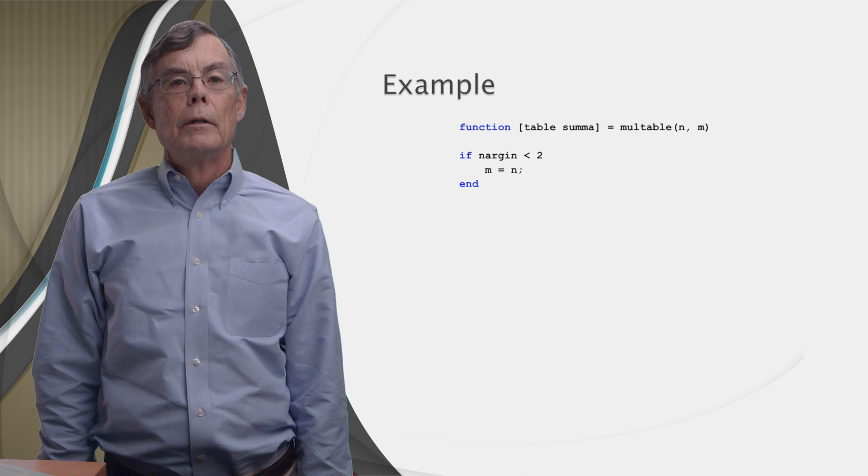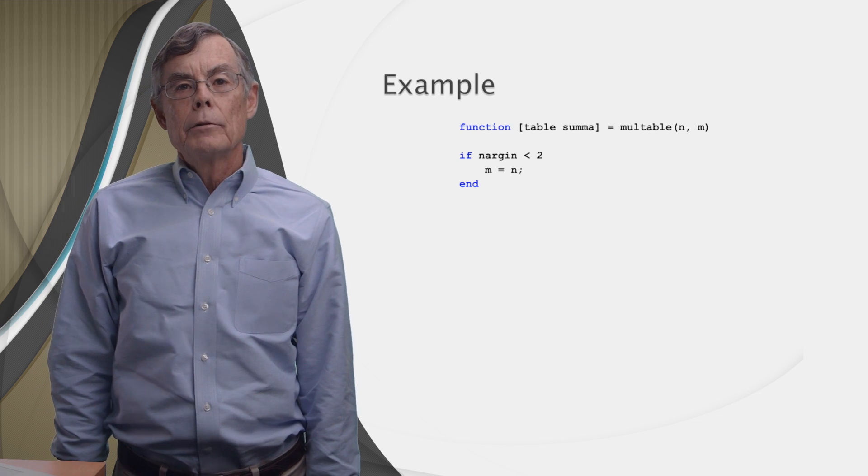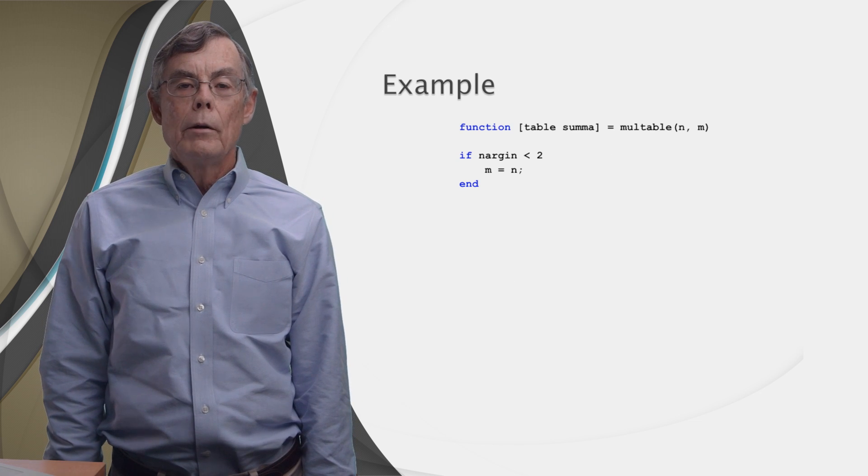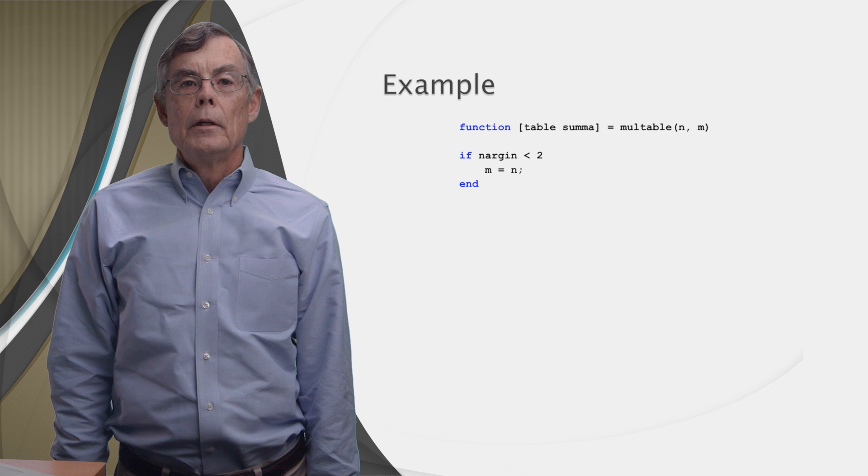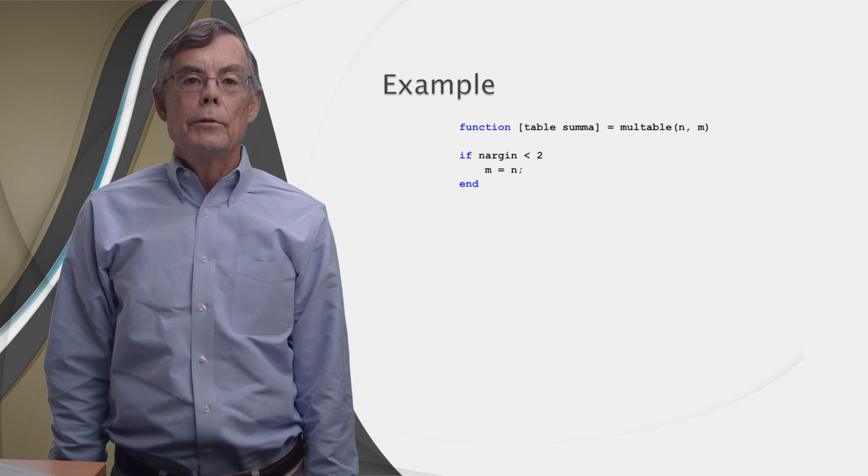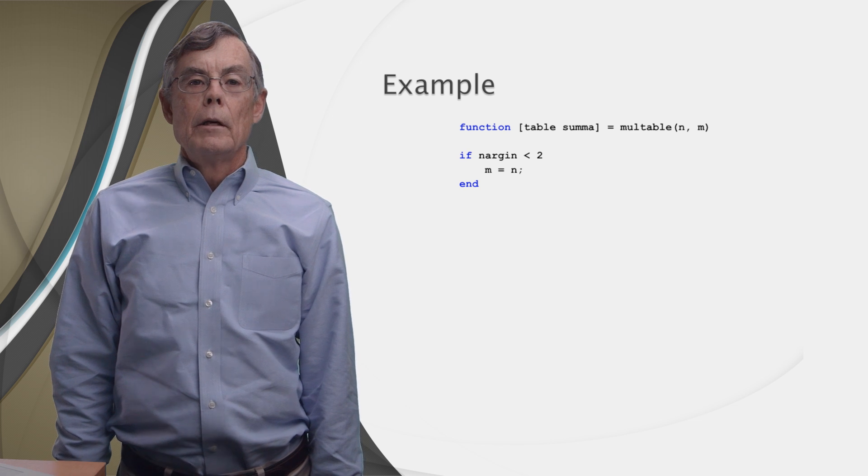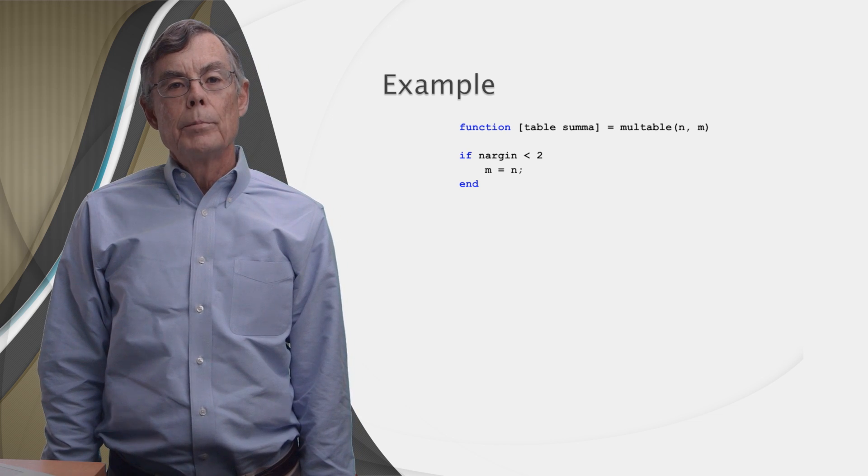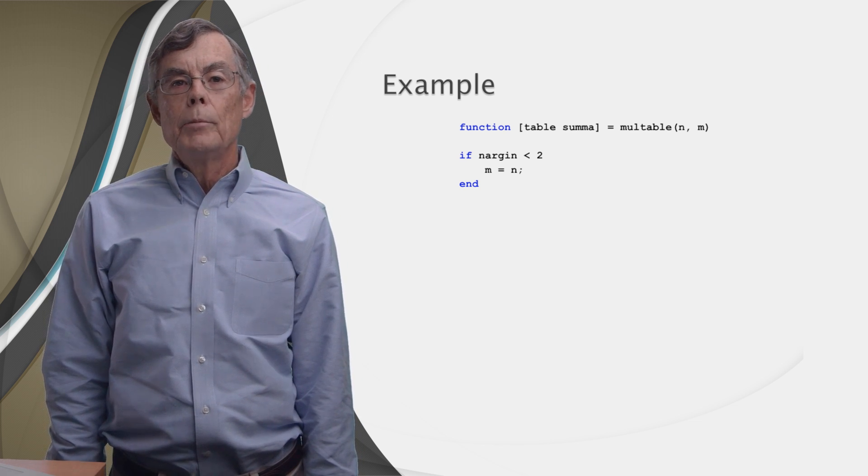So let's see the code. First, we check to see whether the function was called with one or two arguments. If nargin is smaller than two, then it was called with only a single argument. A single argument is always put in the first position, which in this case is the variable n.